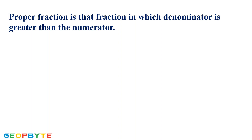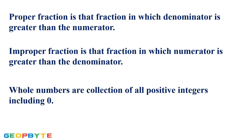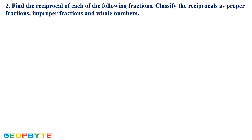What is a proper fraction? A proper fraction is one in which the denominator is greater than the numerator. What is an improper fraction? An improper fraction is one in which the numerator is greater than the denominator. What are whole numbers? Whole numbers are a collection of all positive integers including 0. Based on these three concepts we will solve some problems. Second question: find the reciprocal of each of the following fractions and classify the reciprocal as proper fractions, improper fractions, and whole numbers.